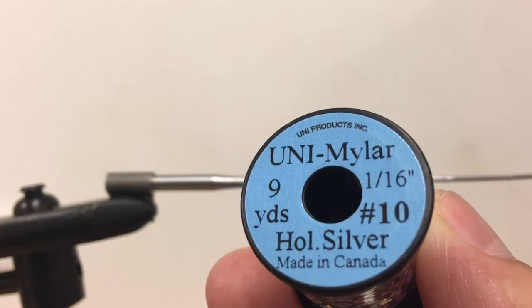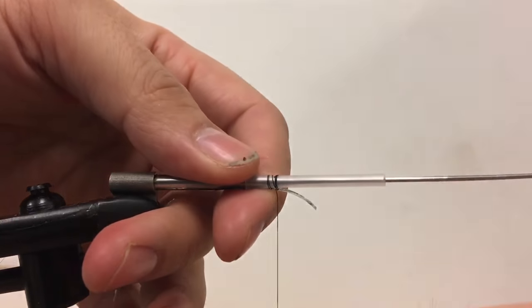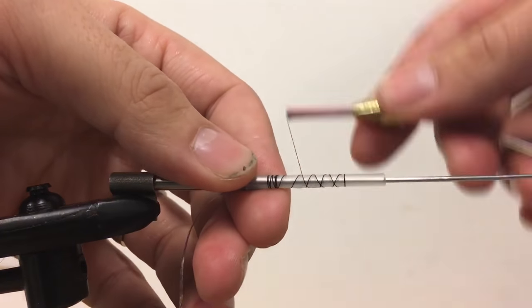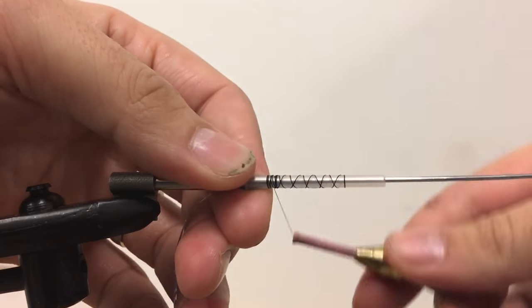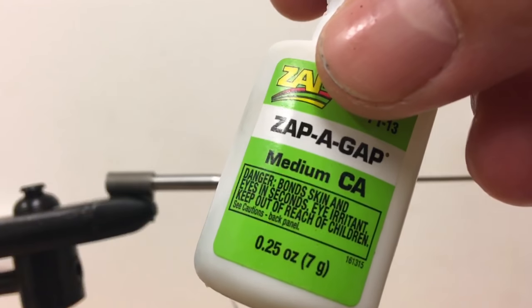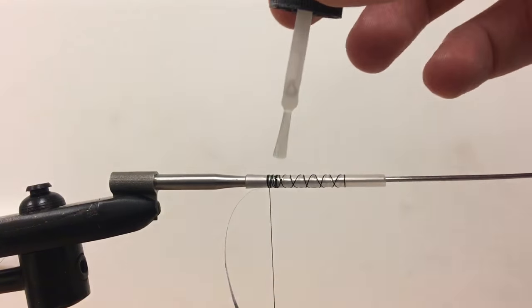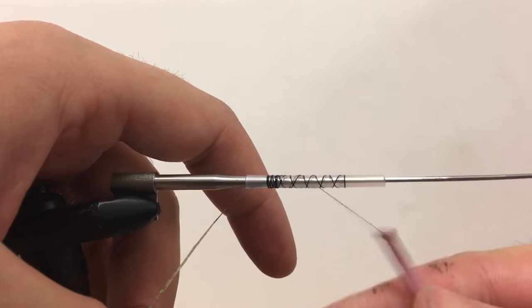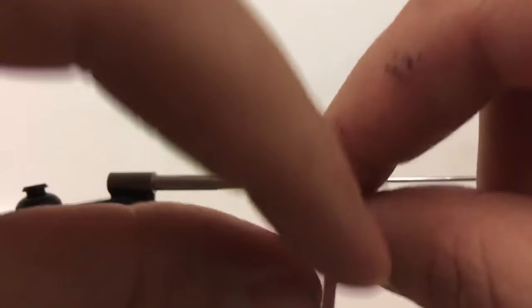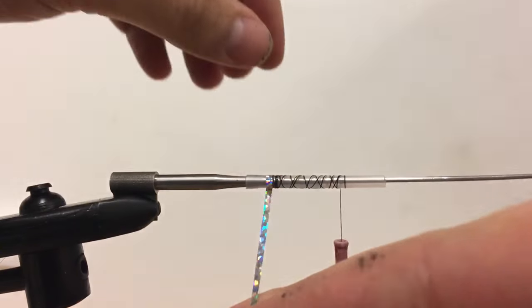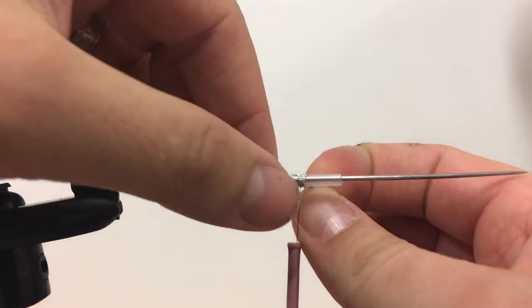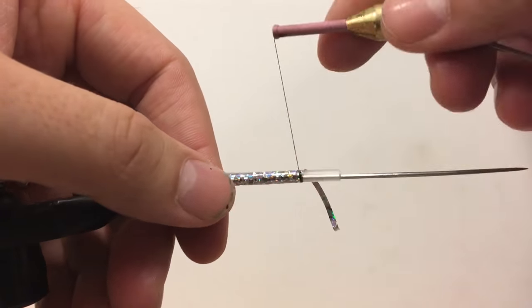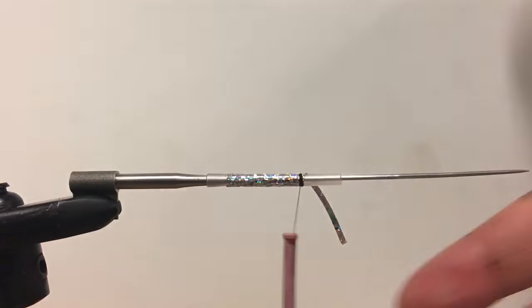We will make the body of the fly using uni muller to get a nice flashy color. We put a tiny drop of super glue on the thread, move the thread to the front, and start wrapping the muller around the tube. Then we secure the tying with thread and cut the excess out.